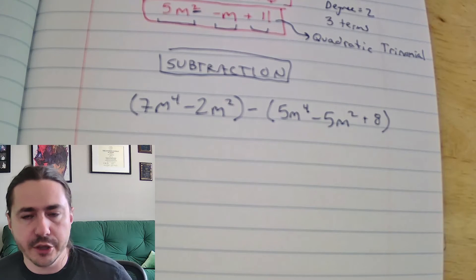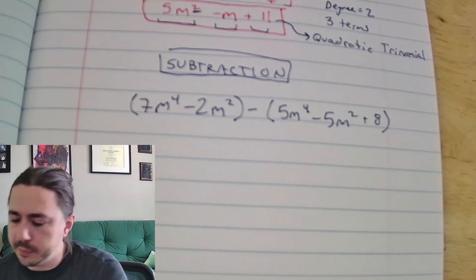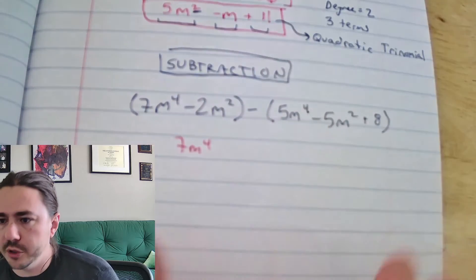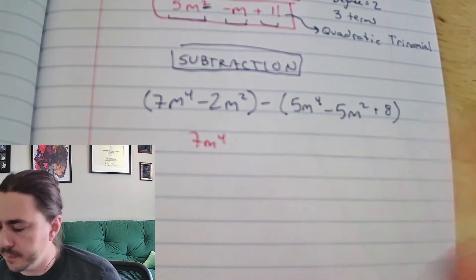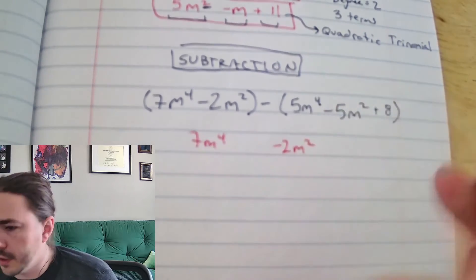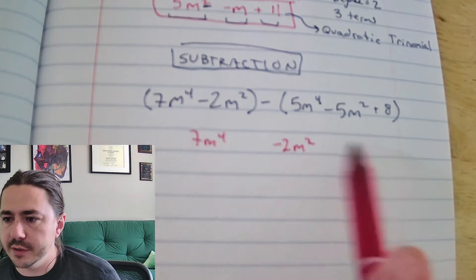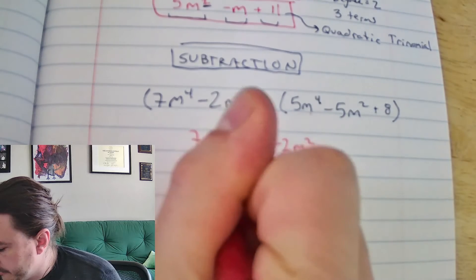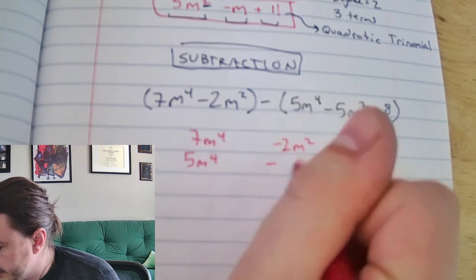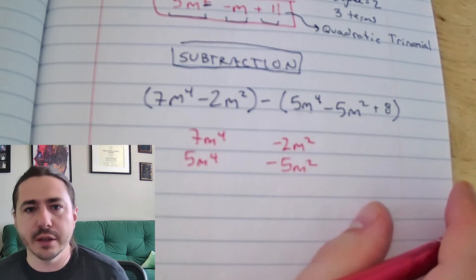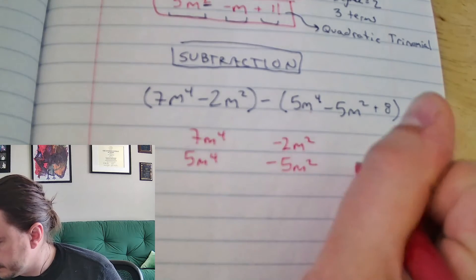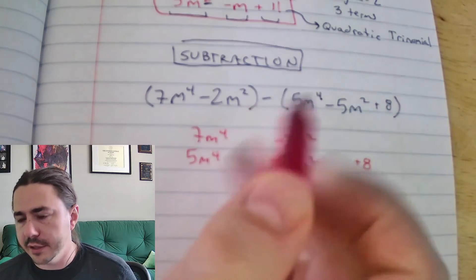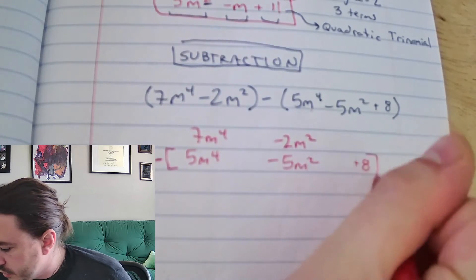Subtraction is very similar except there's one extra piece to worry about. You set it up very similar to addition, lining up all like terms. So: 7m to the fourth, no cubic term so leave space, minus 2m squared, and no linear term or constant — leave space. For the second polynomial: 5m to the fourth, no cubic term, minus 5m squared plus 8. No linear terms on either. Be careful — we're subtracting here, not adding.